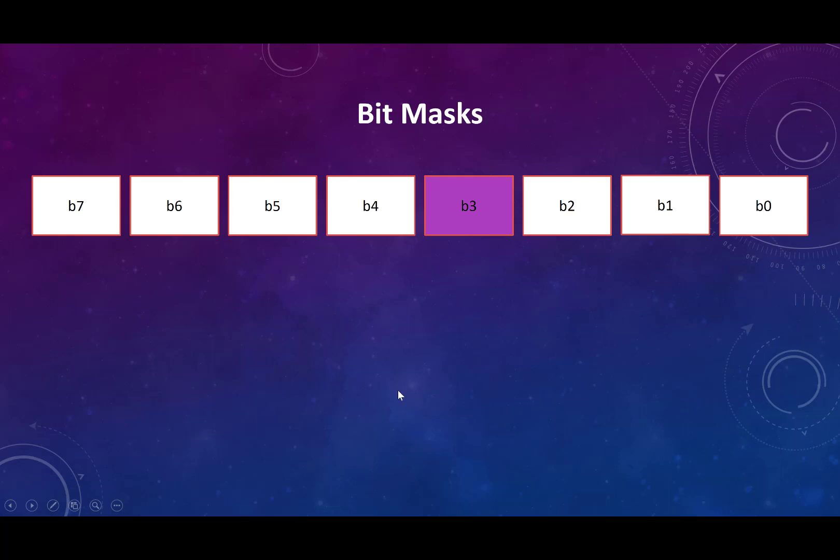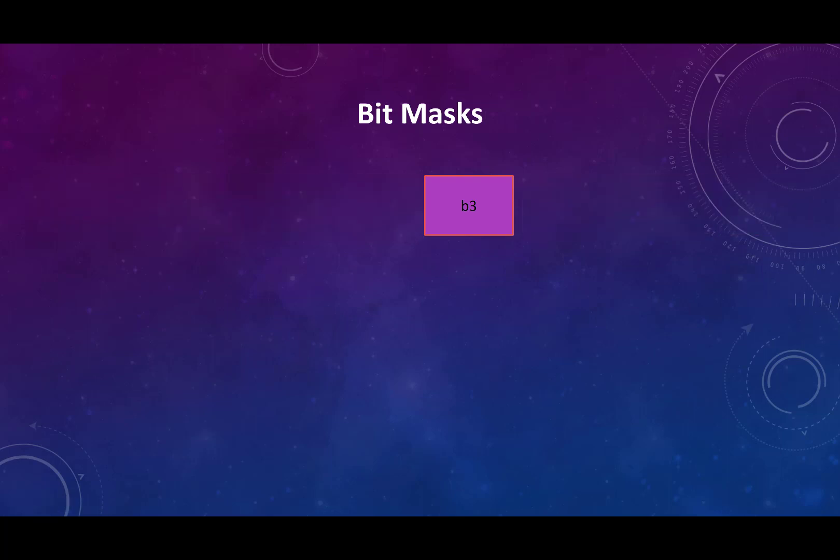Let's talk about bit masking. Imagine that you have some byte and it has a bunch of bits in it. You're only interested in one — let's say B3. How do you get those other bits to go away so that you're left with only the one that you care about?